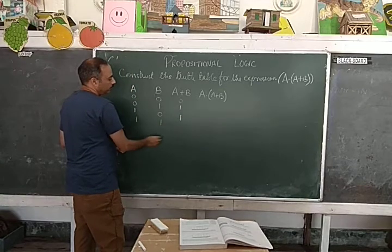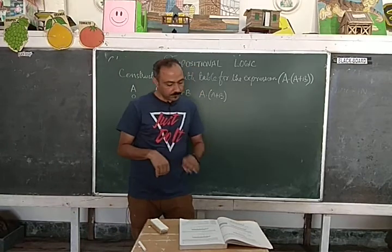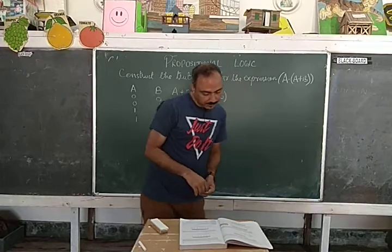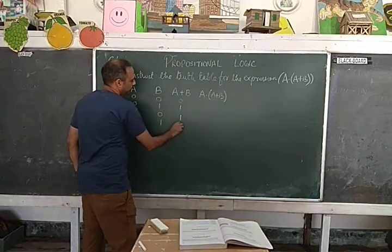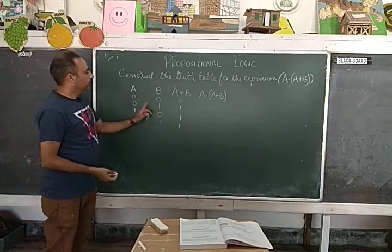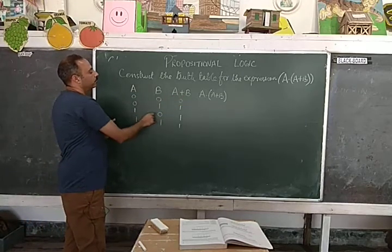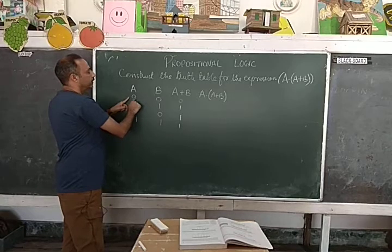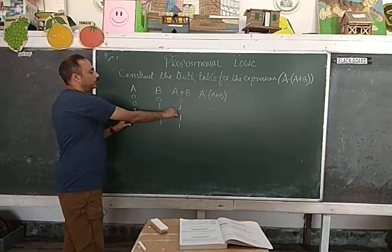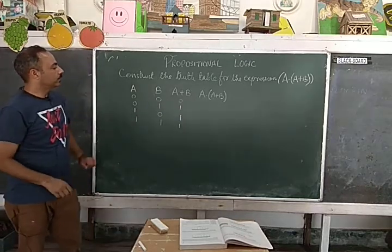Both the conditions are true — that is also true. So this is the expression A or B: if both are false it returns false, if any one is true then true value, and if both are true that is also true value. So this is the A or B expression completed.